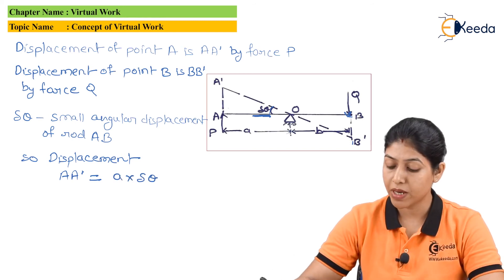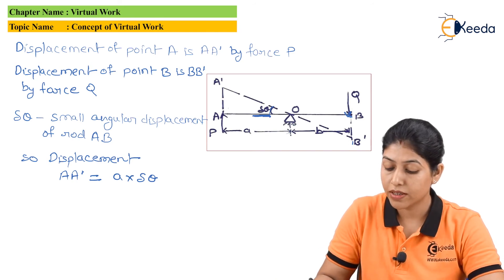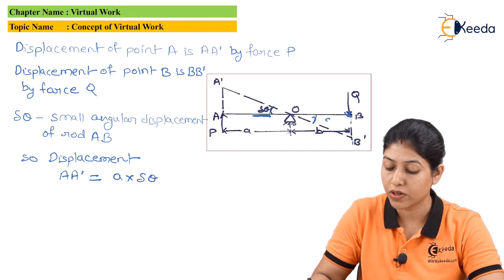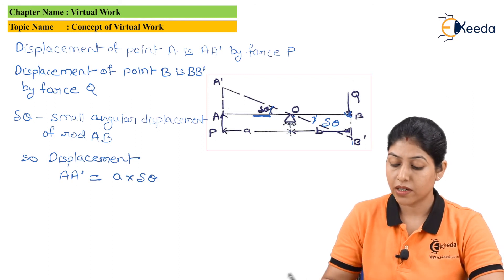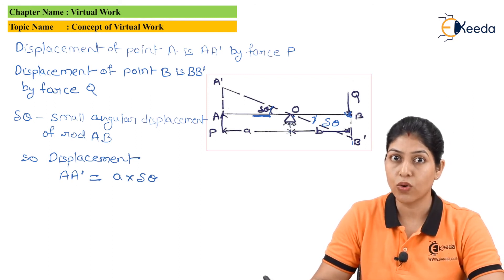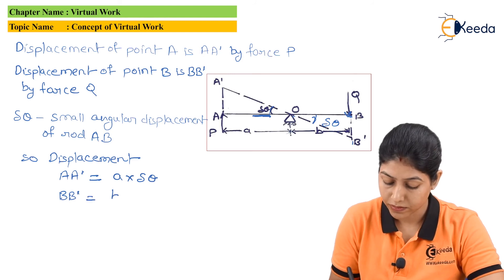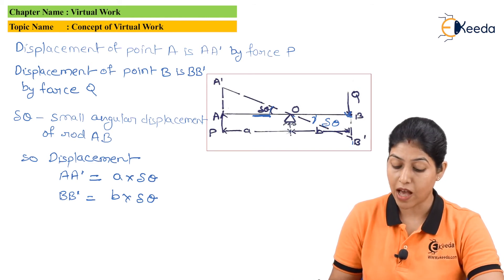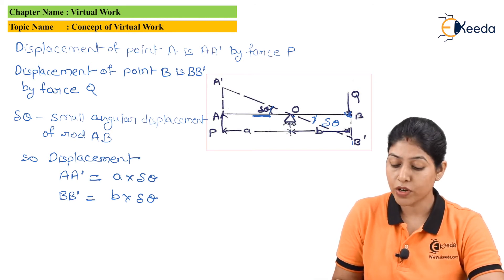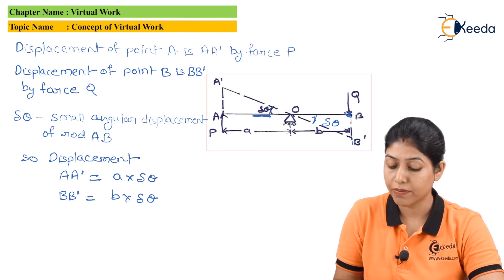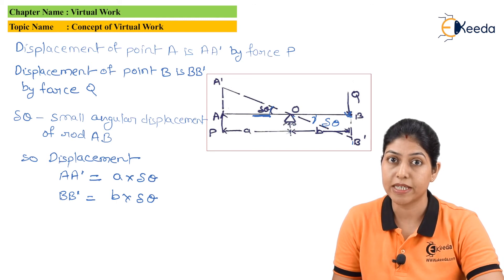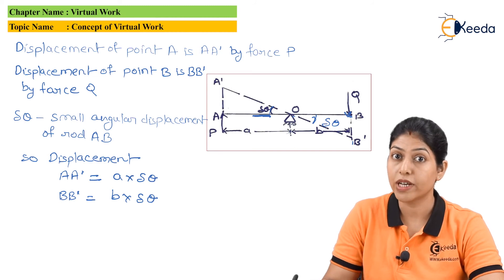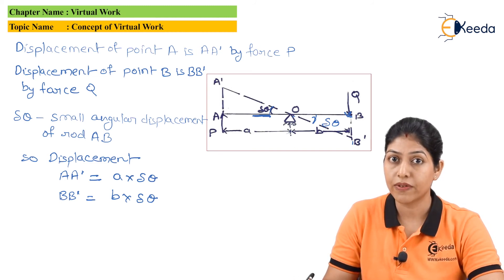Similarly, the displacement BB' can be defined with the help of dimension OB, which is small 'b', and the same angular displacement delta-theta. So the displacement BB' equals b × delta-theta. Now we have the displacements and the forces applicable on points A and B, so we can define the work done by force P and by force Q.